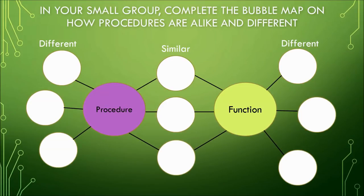Now in your small group, you will complete the bubble map on how procedures are alike and how they are different. The group will be assigned by your teacher. You will create a bubble map as a group and write how procedure and functions are similar. The inside bubbles would be the similarities between the procedure and the function, and the outside bubbles would be how a function is different. The outside bubble would be how a procedure is different.